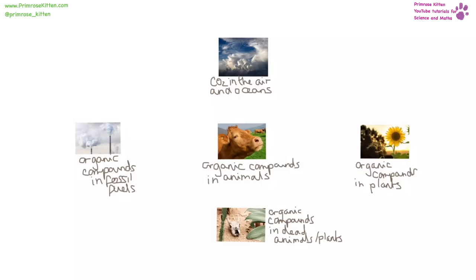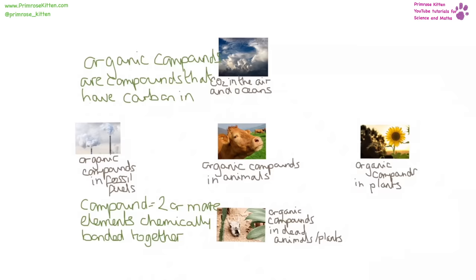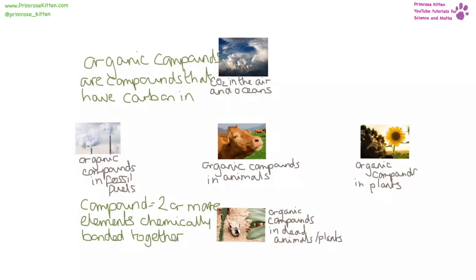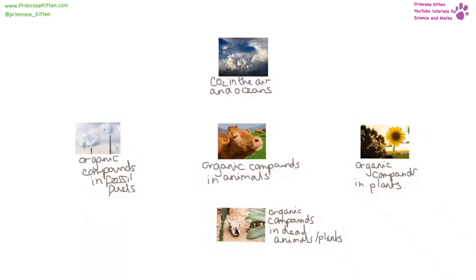For the carbon cycle, I'm referring a lot to organic compounds. Organic compounds are just any compound that has carbon in it — and just to remind you, a compound is two or more elements that are chemically bonded together. Carbon can be found as carbon dioxide in the air, dissolved in oceans, as organic compounds in plants or animals, in dead plants or animals, and in fossil fuels. When we have fossil fuels, we can burn them so that the carbon in them goes into the air, and the name for this is combustion.